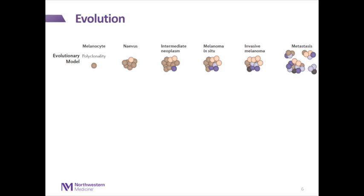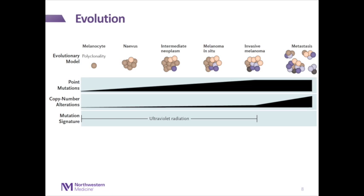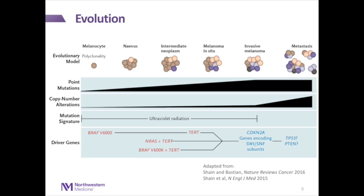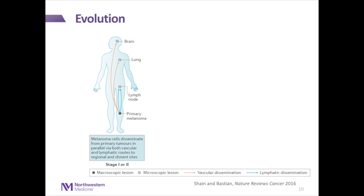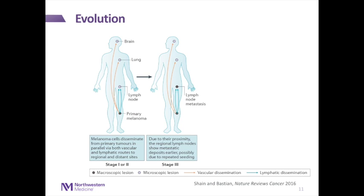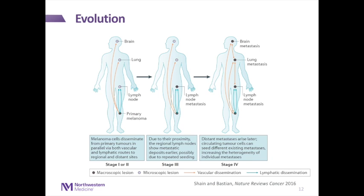One strong point is that the mutation signature reveals that UV radiation is very strongly associated with the development of these first precursor lesions. There is a lot of research in identifying what the driver genes are that lead to melanoma and metastasis. As melanoma advances, you first have a primary melanoma on the skin in stage one or two disease. But as you get to stage three, the melanoma reaches the surrounding tissue and lymph nodes. At stage four disease, you can get a detectable tumor in other parts of the body.